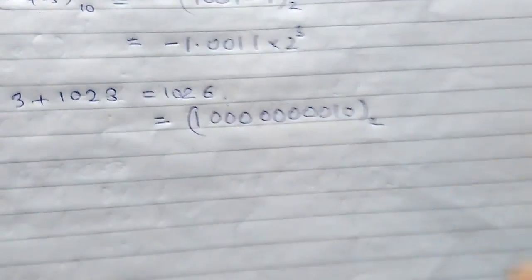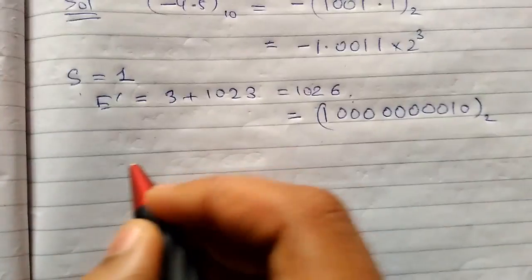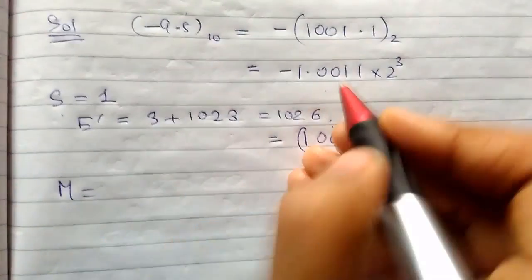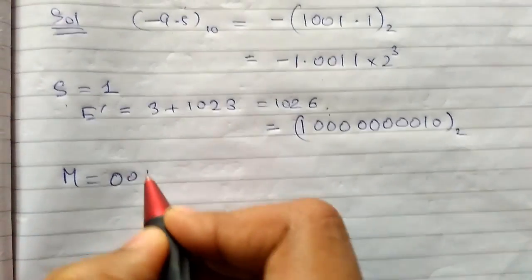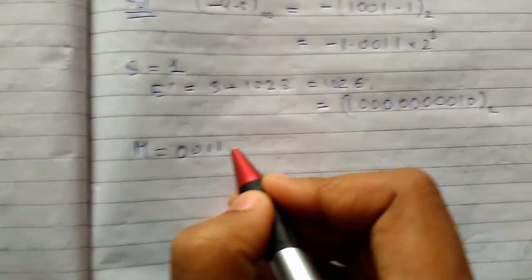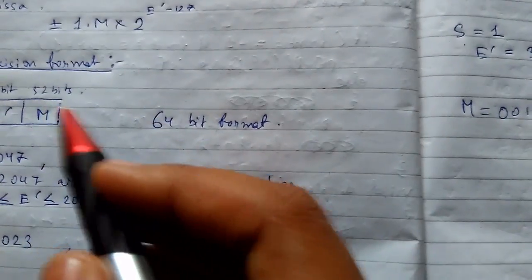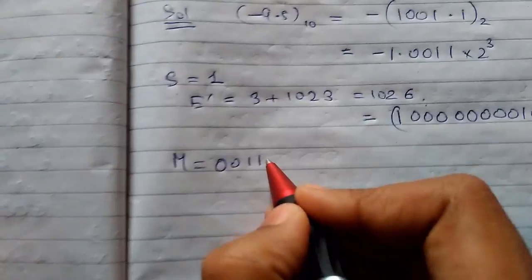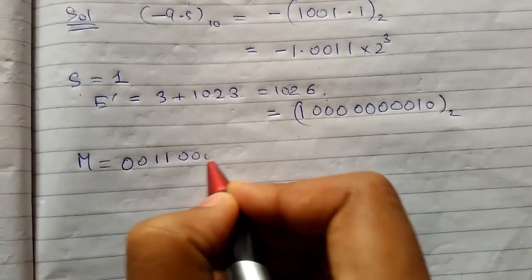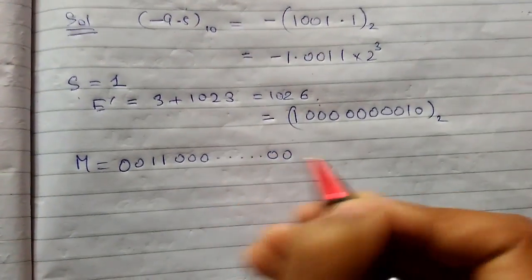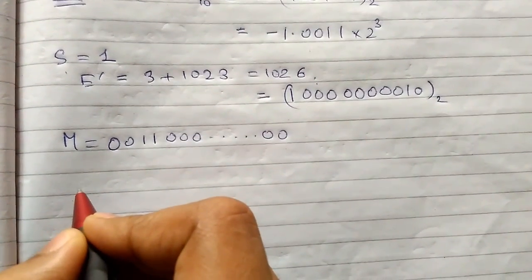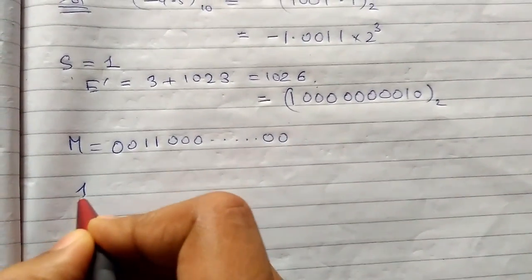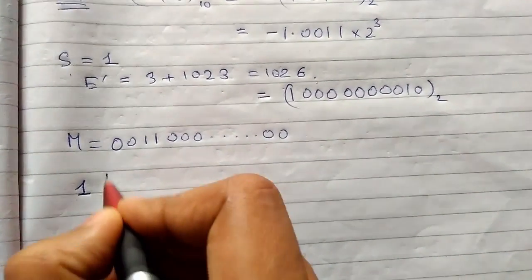This is the converted binary number for 1026. For the mantissa, the bits are 0011. The mantissa size is 52 bits, so we write 0011 followed by the remaining zeros, shown with dot dot dot. Now write it in box form to make it look good.